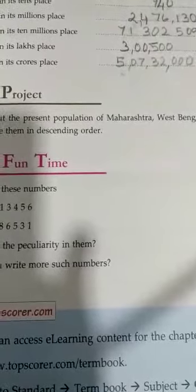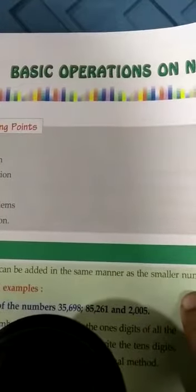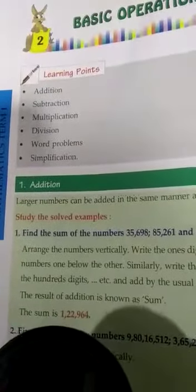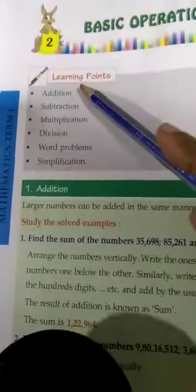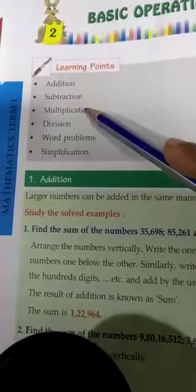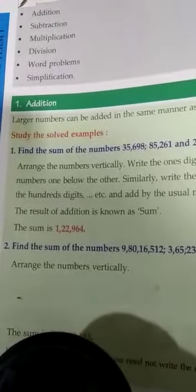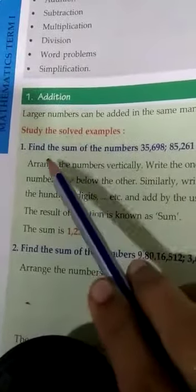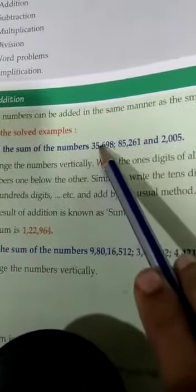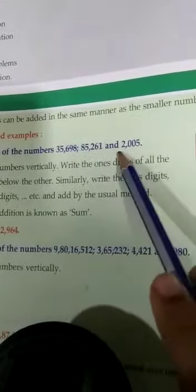Now let us see what the next chapter we are going to learn is. Children, we are going to start our new chapter — it is basic operations on numbers. We are learning basic operations, dealing with big numbers: thousands, lakhs, crores and all that. The basic operations are addition, subtraction, multiplication, division, and simplification. First we will be learning addition of large, big digit numbers. They have given 35,698, 85,261 and 2,005 — so 3 numbers you have to add.